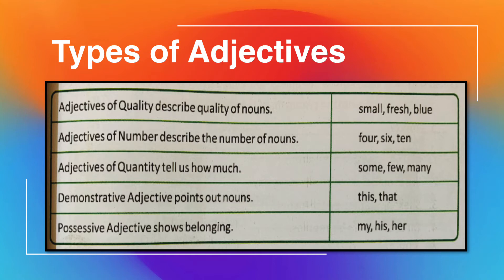Second is adjective of number, which describes the number of nouns. Nouns ka kya hai, number describe karte — jaise 4, 6, 10. Third, adjectives of quantity tell us how much of something there is, such as some, few, many.